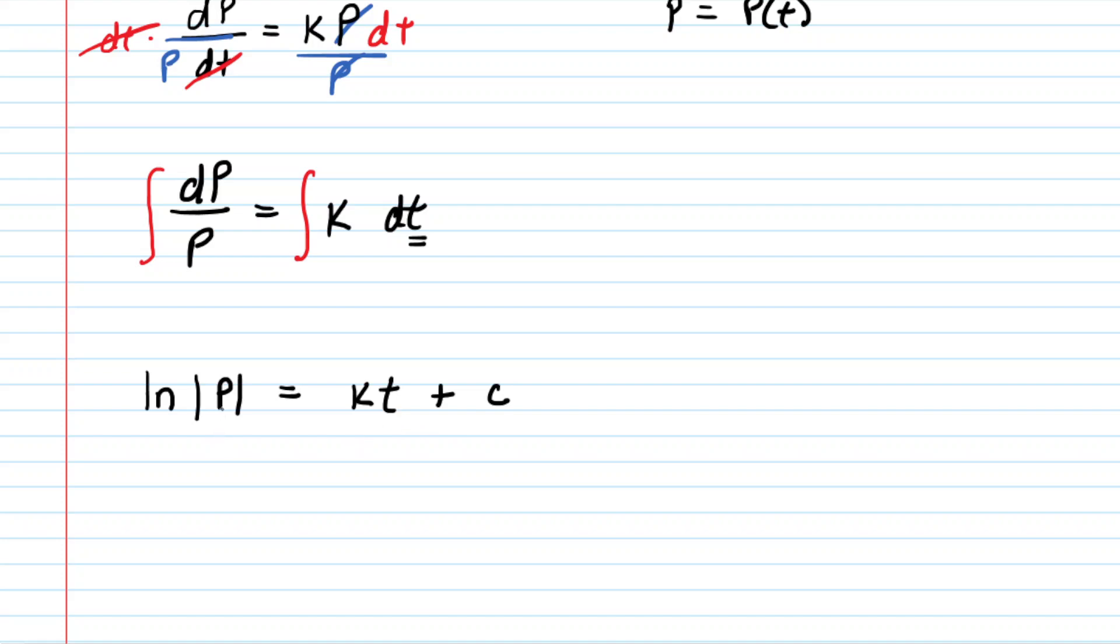And the next thing we want to do to solve for P is raise e to both sides of the equation. And essentially what happens is e and the natural log, because they're inverse functions, cancel each other out. So now we simply have isolated P. On the right side, we have e to the power of kt plus that arbitrary constant.